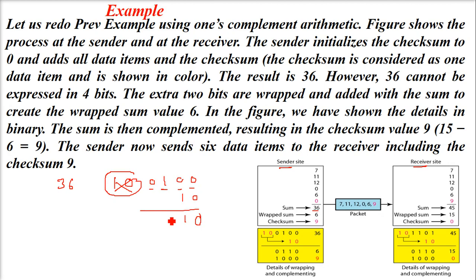We only have 4 bits, so we put it below and wrap it around. Discard this, put it below, and add them. When we add 0 and 0 is 0, 0 and 1 is 1, 1 and 0 is 1, 1 and 0 is 1. This is the wrapped-around sum. This is not the checksum yet.